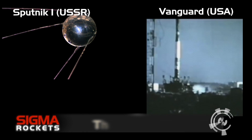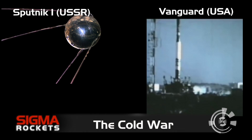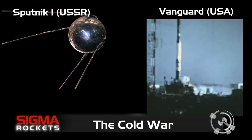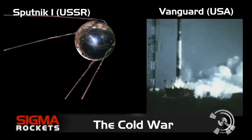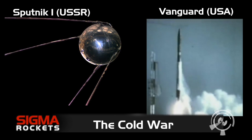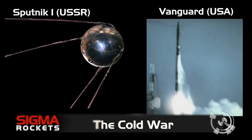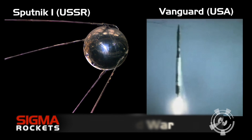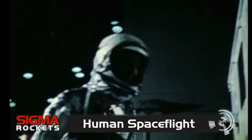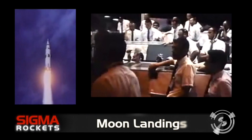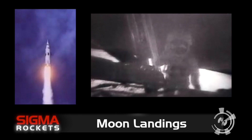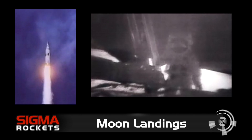The Cold War between the Soviet Union and the United States following the Second World War brought about a race into space between the two nations. Sputnik 1, launched by the Soviet Union, became the world's first artificial satellite. Human flights into space followed, culminating in the landing on the moon in 1969. The massive Saturn V rocket was the vehicle to do the job.